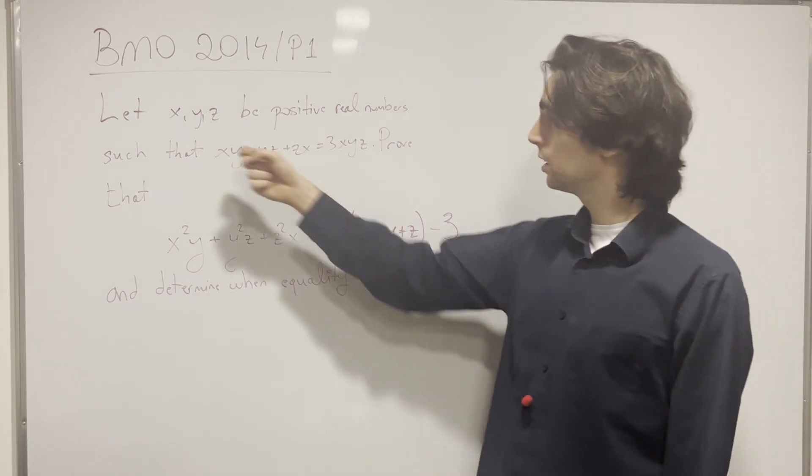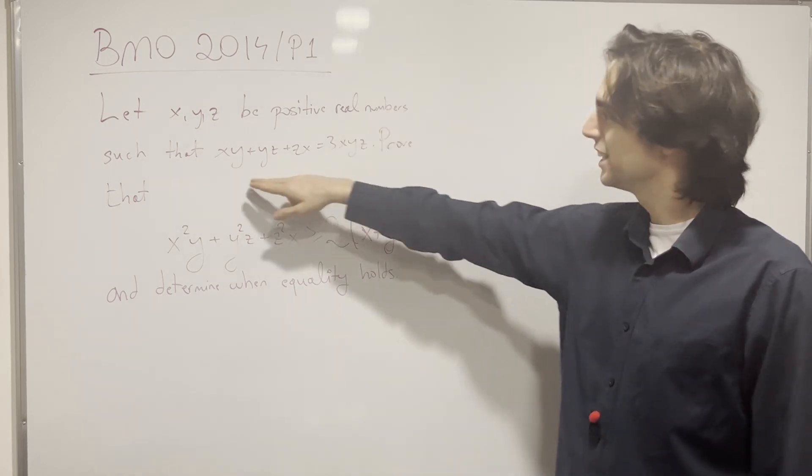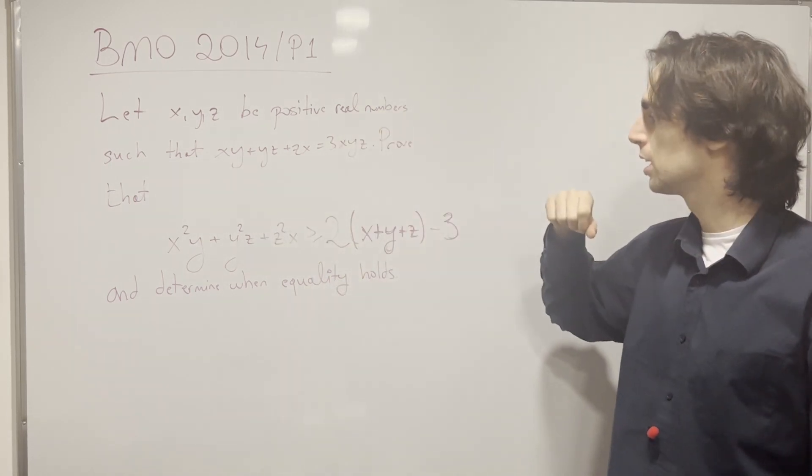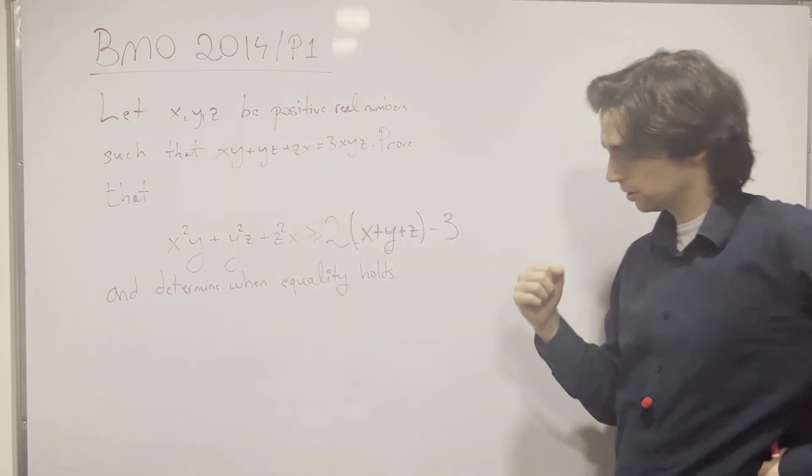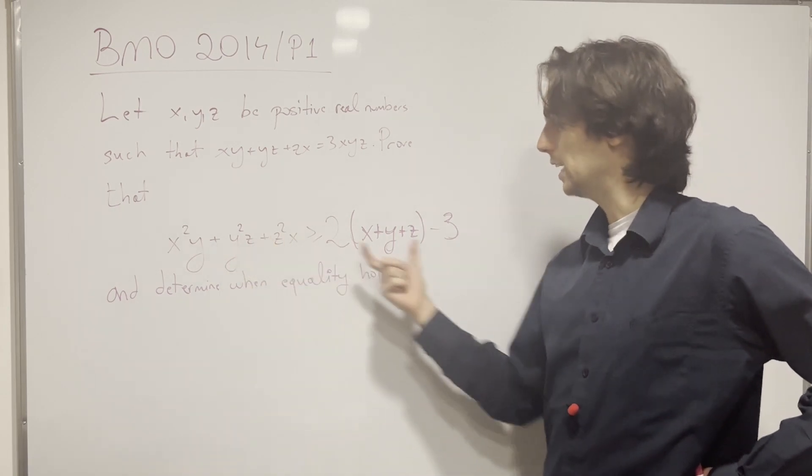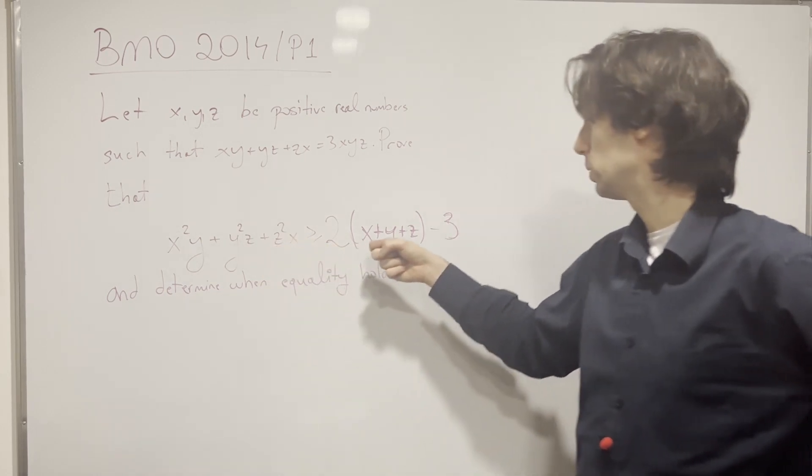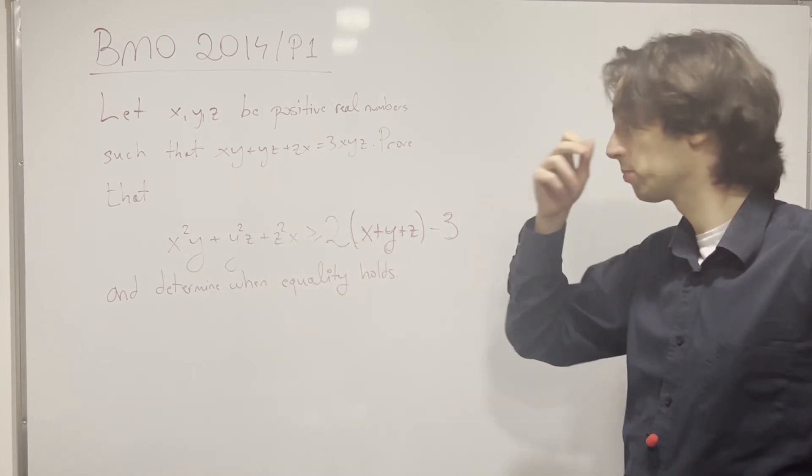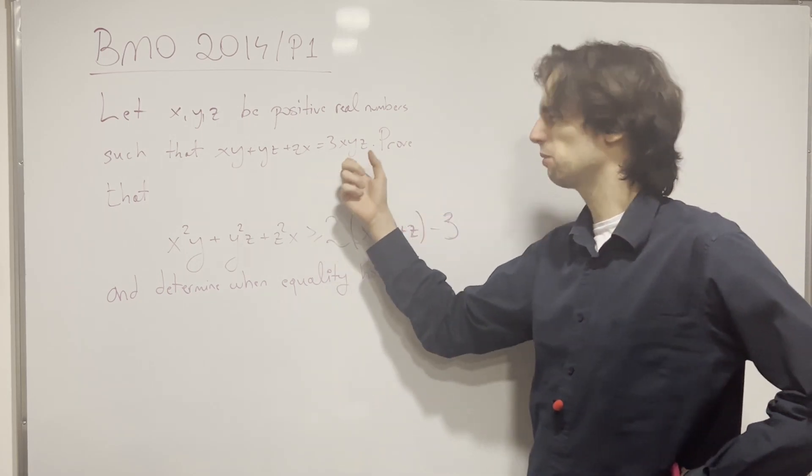So what do we have? Let x, y, z be positive real numbers such that this condition is true, and then we need to prove this thing right here. So in order to prove this, there are a couple of things we need to figure out. First, this is not homogeneous, right? This is of degree 3, this is of degree 1, this is of degree 0. And this condition isn't homogeneous either, this is of degree 2, of degree 1.